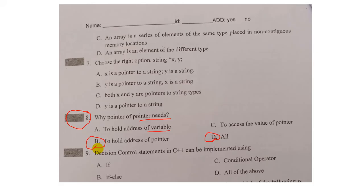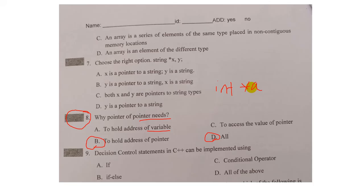To hold the address of a pointer - logically, in this case, you can see that this will be valid. Pointer of pointer - a simple example: a pointer is created. In order to hold the address of this pointer, you must create another pointer of pointer.